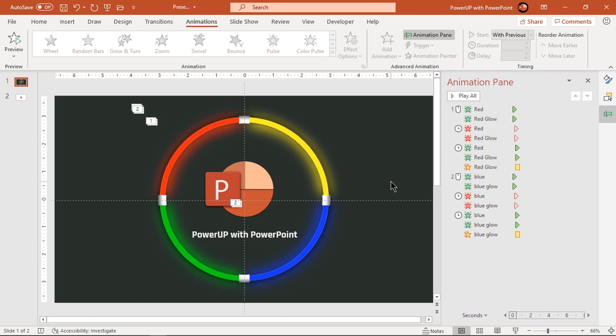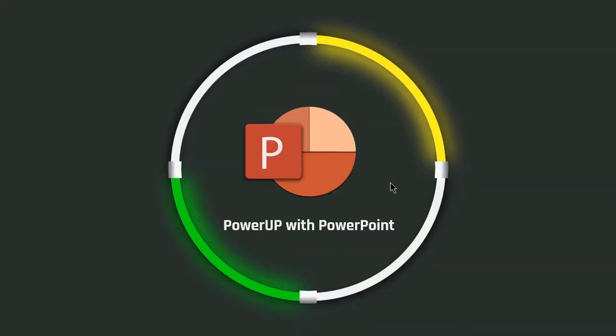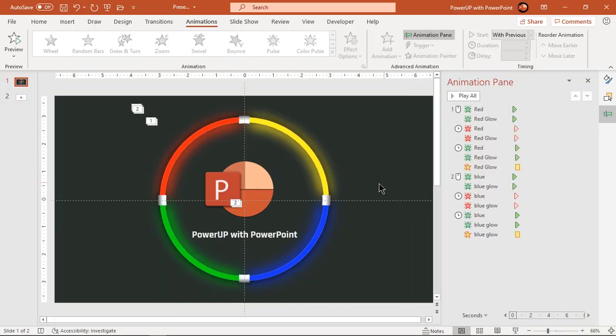Let's preview the animation again — looks perfect. Continue to apply the same sequence of animations to the other two quadrant shapes.